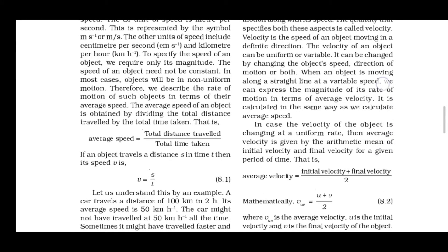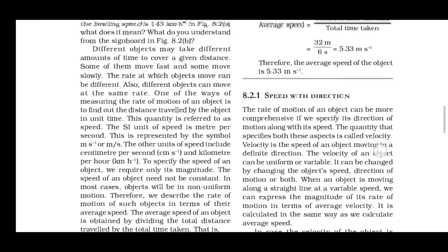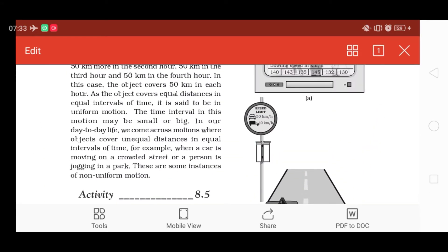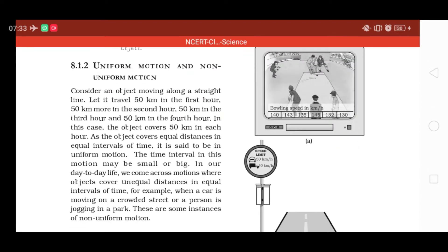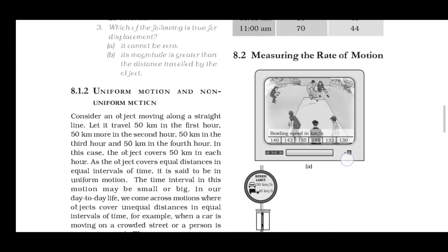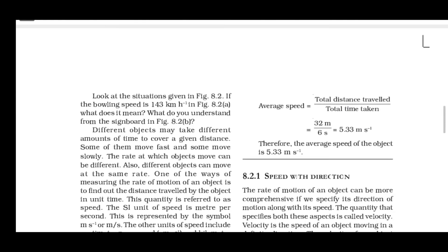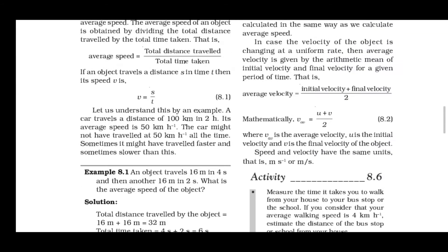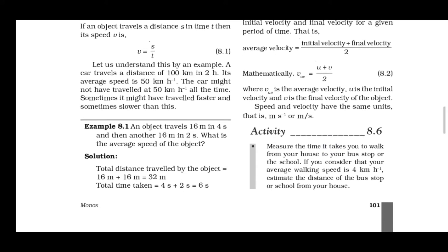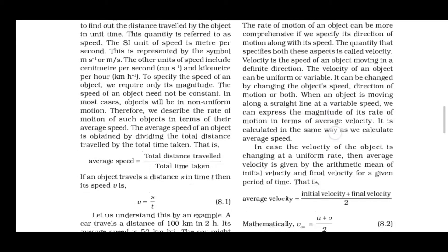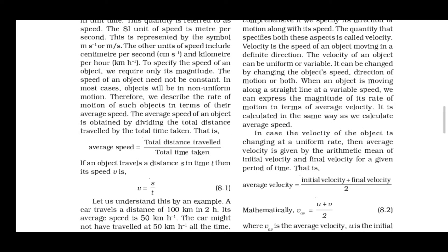Hello students, welcome to my channel. In this video on 9th class Chapter 8 Motion, we previously understood uniform motion, non-uniform motion, and average speed. In this video we are going to take one example on average speed, and after that we are going to understand speed with direction — that means velocity.